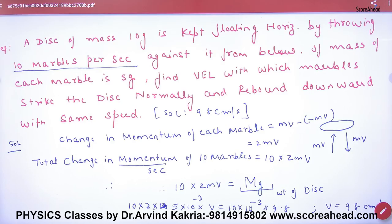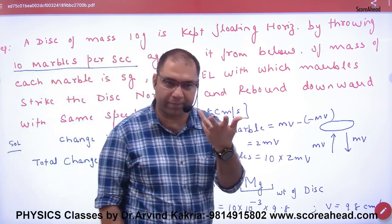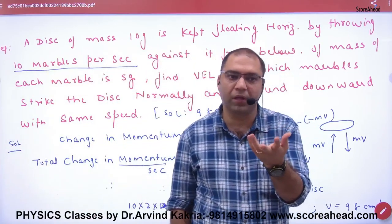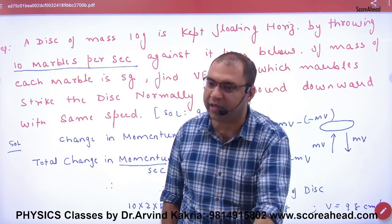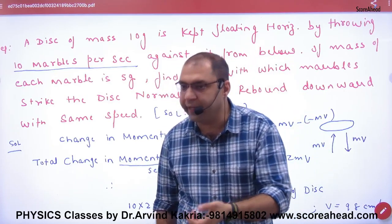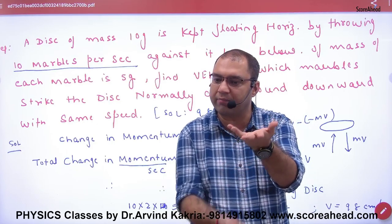Next question: A disk whose mass is 10 grams is kept floating horizontally by throwing 10 marbles per second. So basically, there's a disk floating in air. The disk can't actually rest in air; it should fall down because of its weight. But someone started throwing marbles from below.